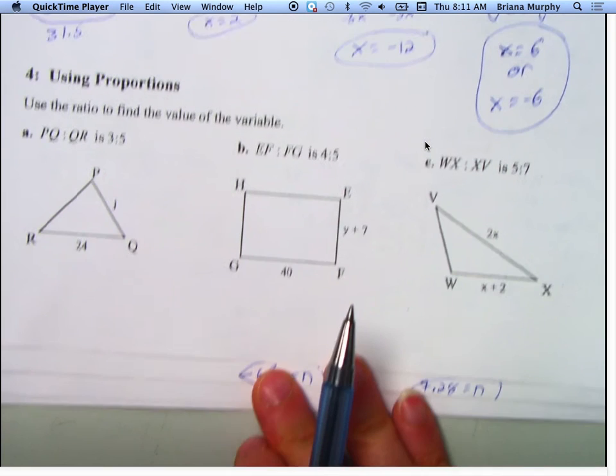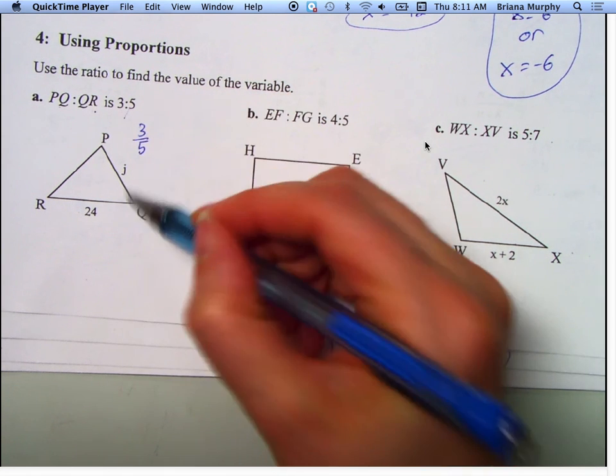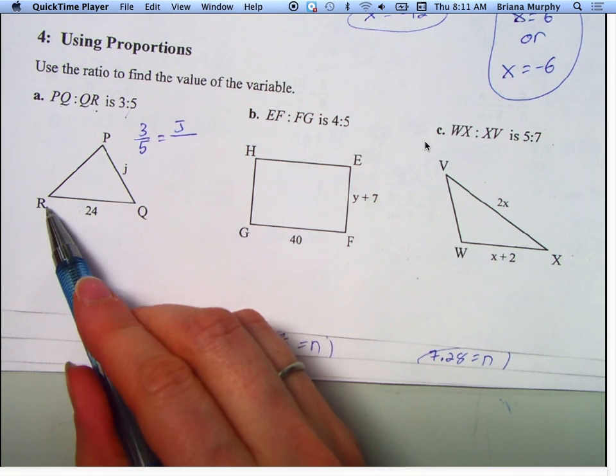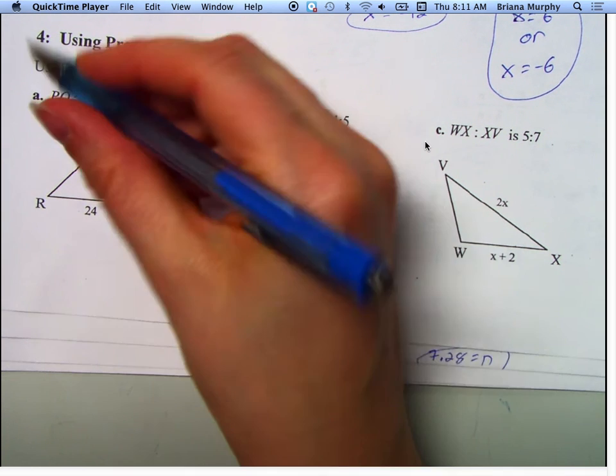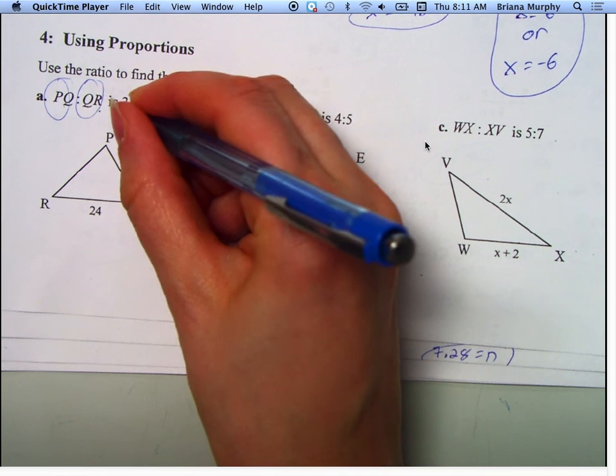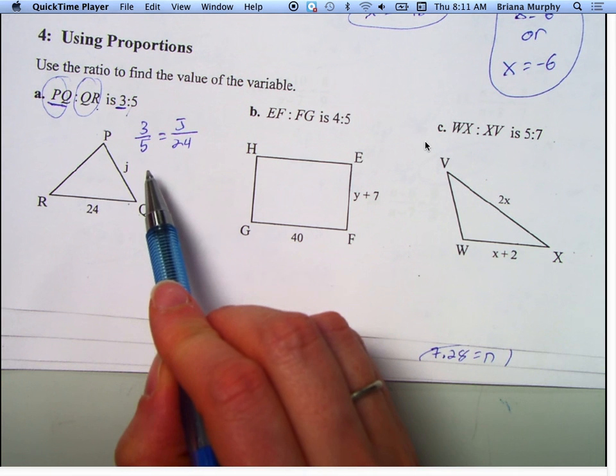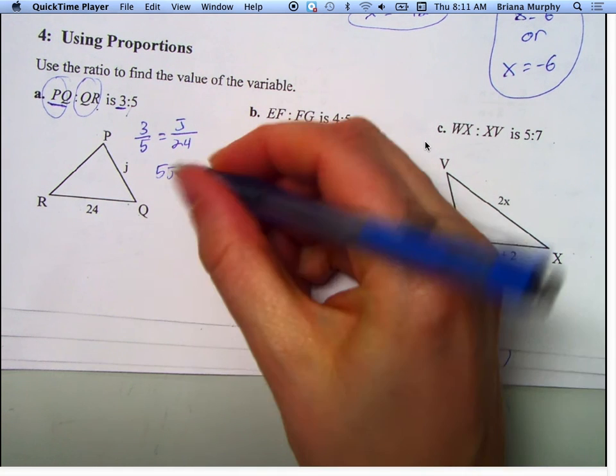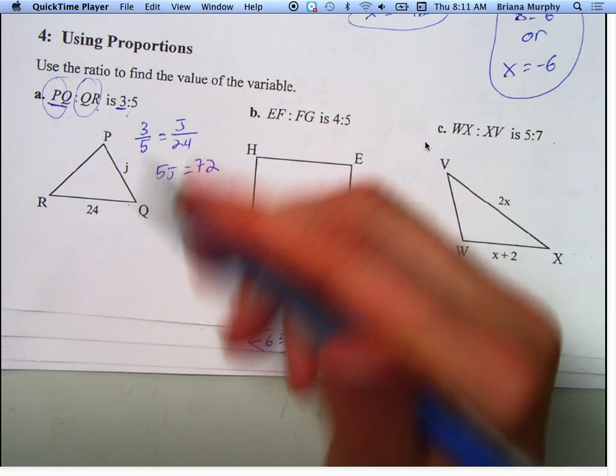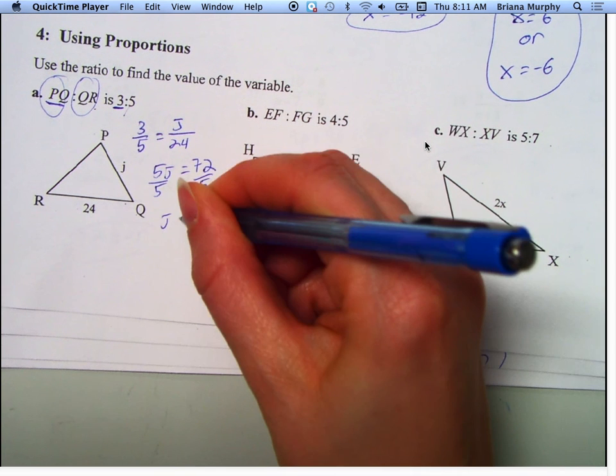Number 4, using proportions. PQ and QR is 3 to 5. So I'm going to go 3 to 5. PQ is J over QR is 24. So be careful how I set that up. I'm saying PQ over QR is 3 to 4. So 3 and PQ both have to go on top. PQ is J. So I'm setting up my own proportion before solving it. 5 times J is 5J. 3 times 24 is 72. Divide that by 5.